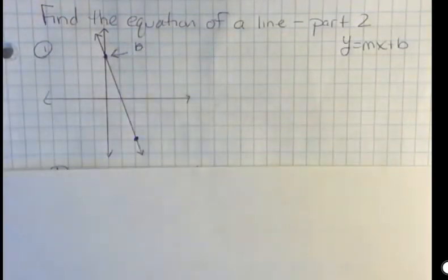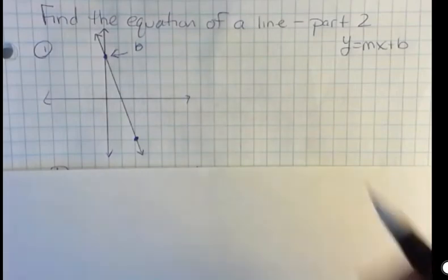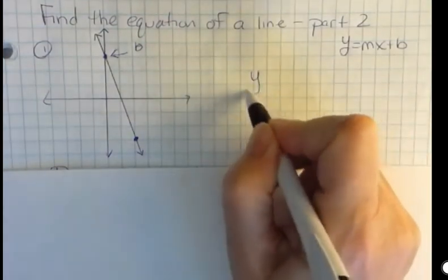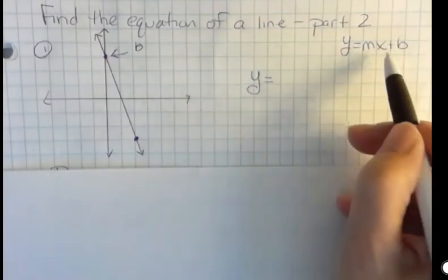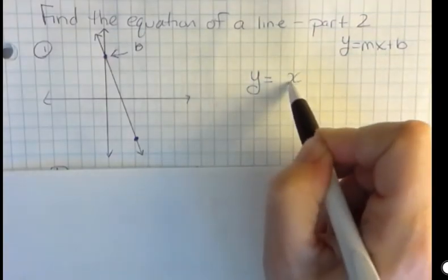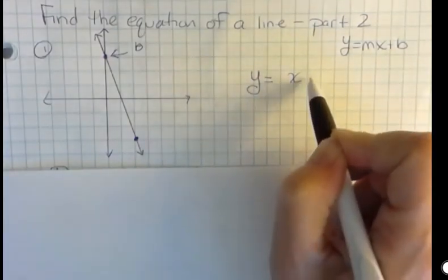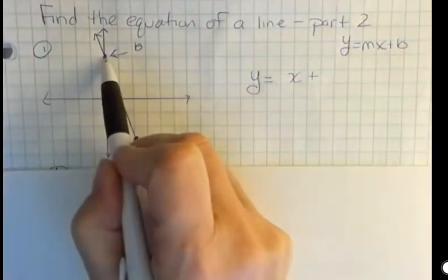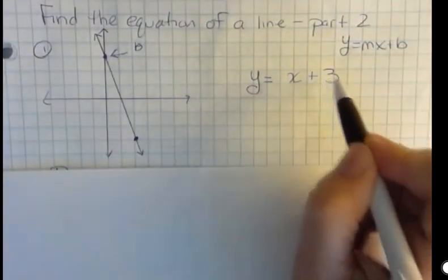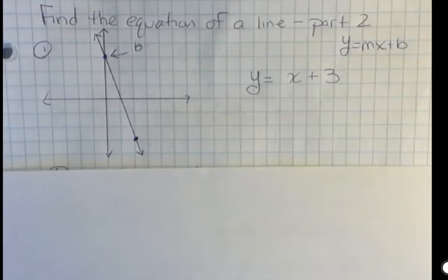This is b. It's lowercase b when you use that for y-intercept. So what I know is I have y equals, I don't replace the x, I do replace the m, and I know b now is three, because that's where it crossed the y-axis. If it was negative, I'd put a minus three there. And so the other part that I need to do is figure out the slope.